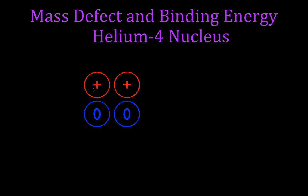The protons and neutrons — those four things, the two protons and the two neutrons — make up the helium-4 nucleus. What we're going to do is add up the mass of those four things before they're bound together in the nucleus, and we're going to call that the mass before.